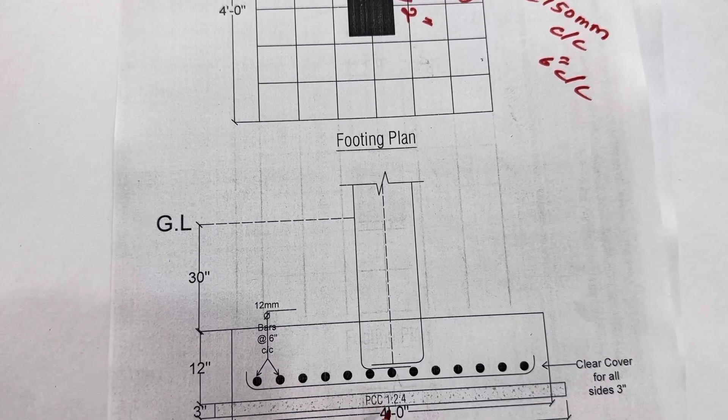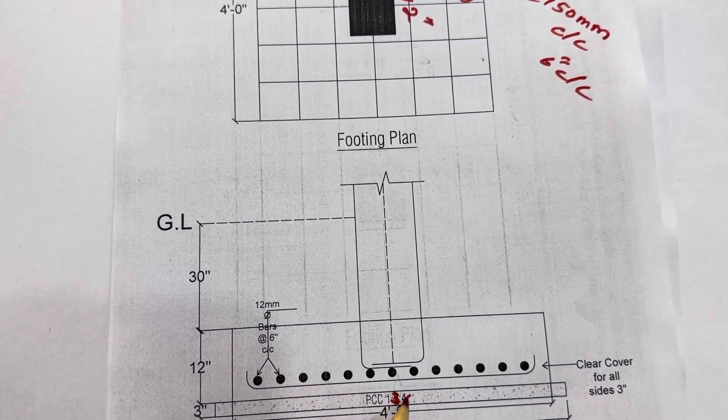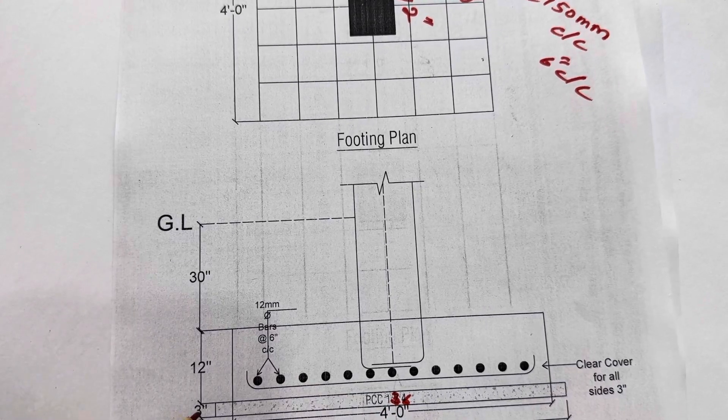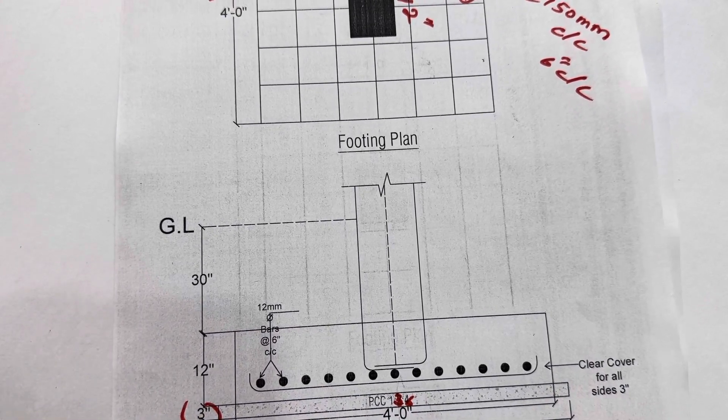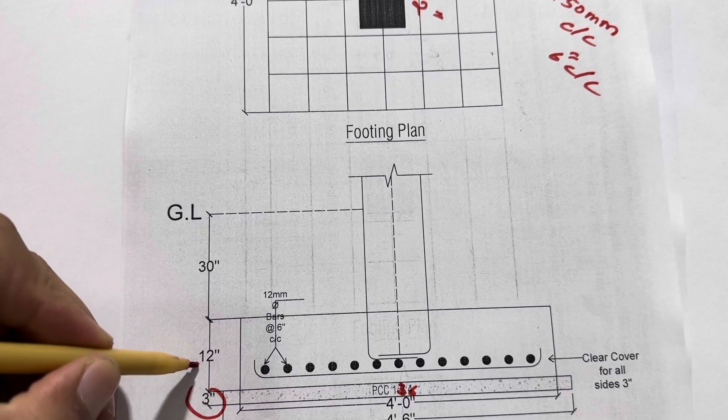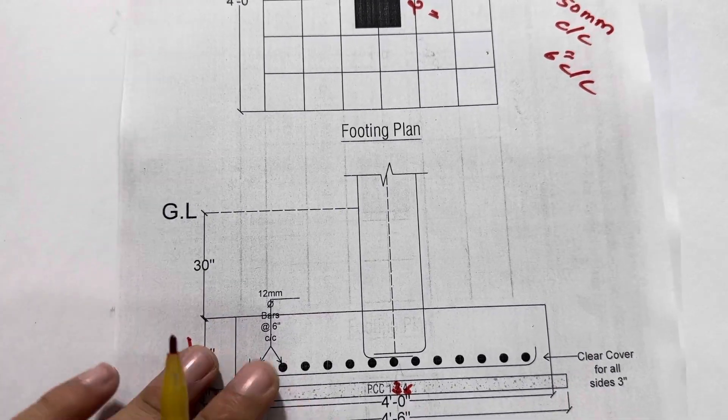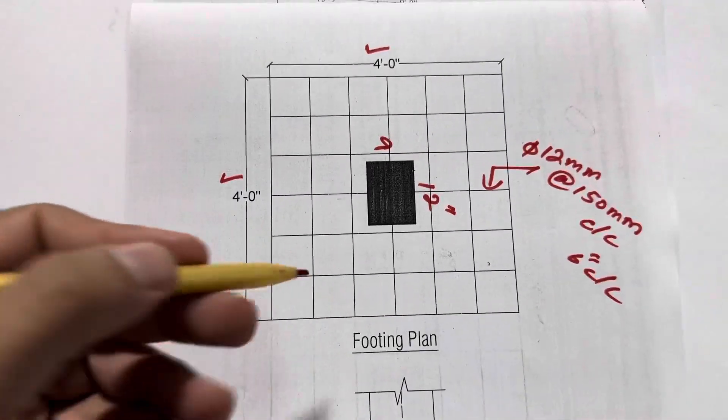You can see our PCC with the ratio of 1:3:6, with the thickness of 3 inches. After that, the bed depth is 12 inches. You can see the steel reinforcement from this top.